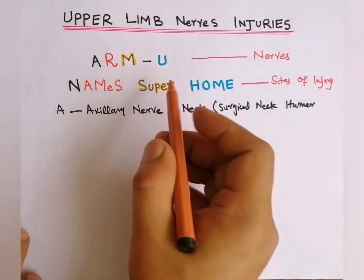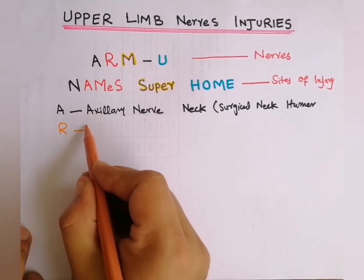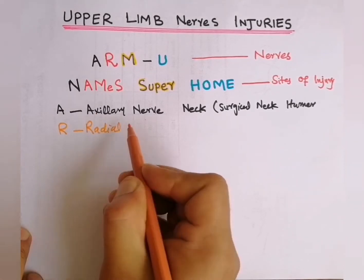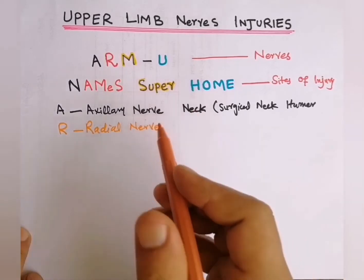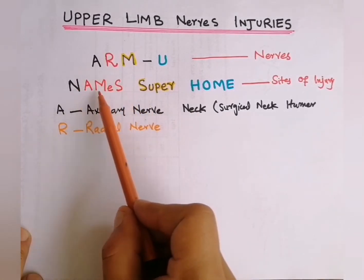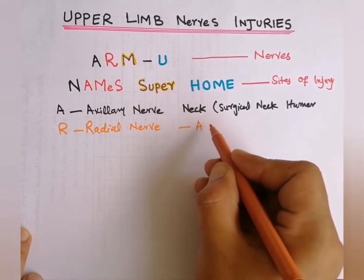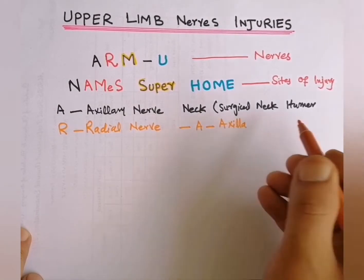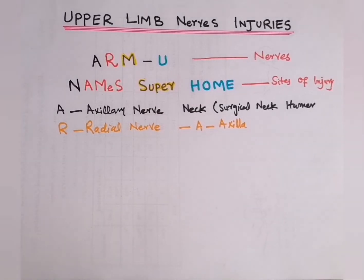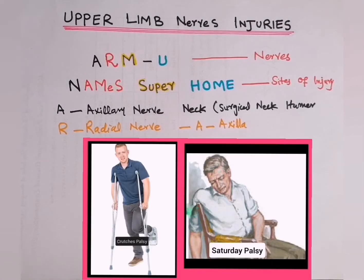R in RMU is for the radial nerve, which is commonly damaged in NAMS. Here A is for axilla — that is inferior dislocation of the axilla — which is also called Saturday night palsy or crutch palsy, because on Saturday night people mostly take excess alcohol and fall asleep in a chair, leading to damage of the radial nerve. Similarly, in crutch palsy, crutches damage the radial nerve.